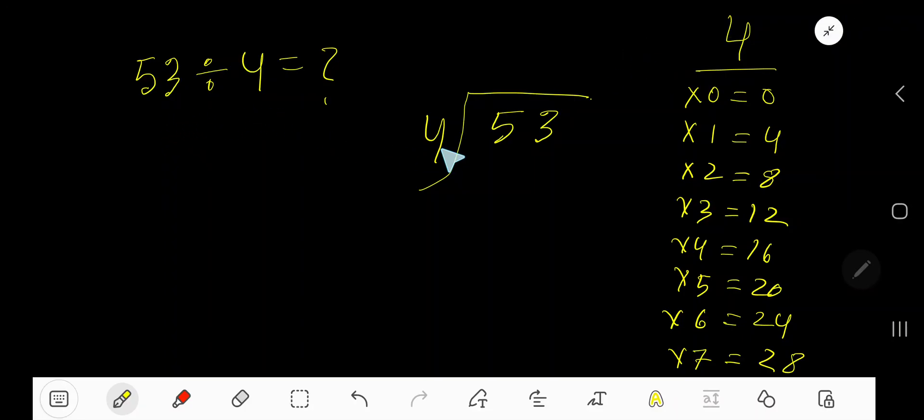53 divided by 4. Here 4 is a divisor, so we need the multiplication table of 4. 4 times 0 is 0, 4 times 1 is 4, 4 times 2 is 8, 4 times 3 is 12, 4 times 4 is 16.